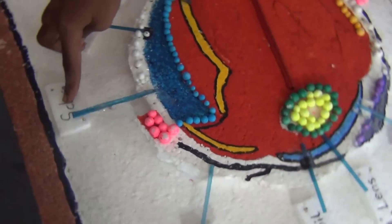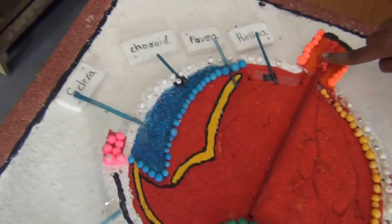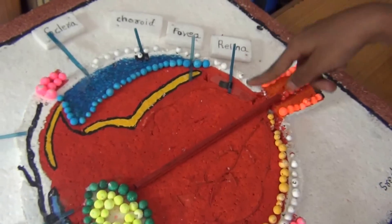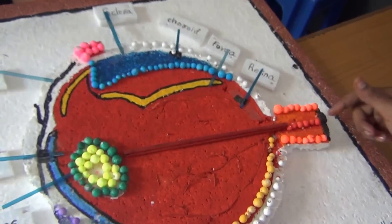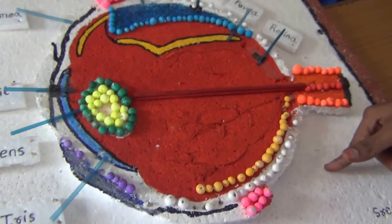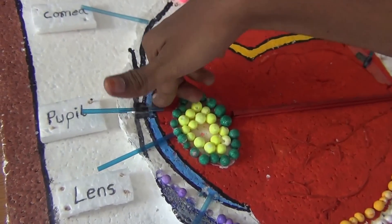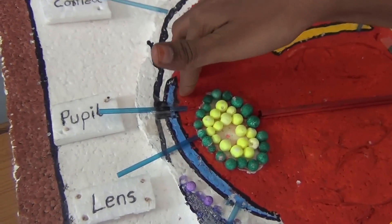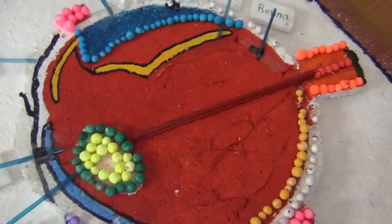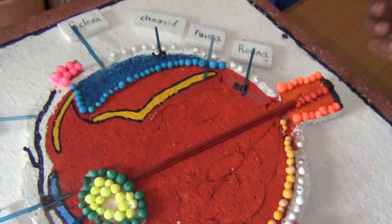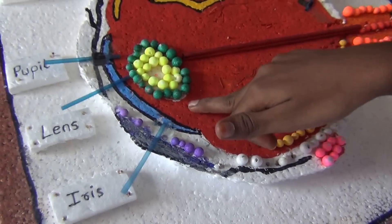The end of the sclera is connected to the optic nerve. The retina contains two types of cells — there are rods and cones. The lens divides the outer eyeball into the aqueous chamber and vitreous chamber. The iris is connected to the pupil.